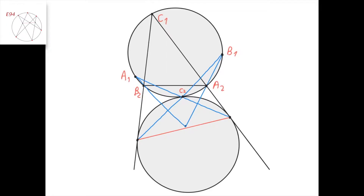Finally, let's apply Pascal's theorem for the hexagon A1, B2, C2, A2, B1, C1. Then A1B2 intersects A2B1 at the excenter of the triangle, A1C2 intersects C1A2 at this point of tangency, and B1C2 intersects C1B2 at this point of tangency. By Pascal's theorem, these three points lie on a straight line.